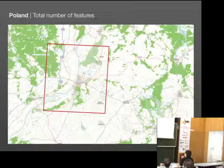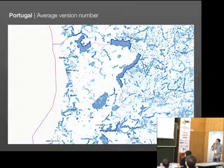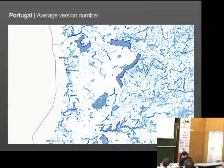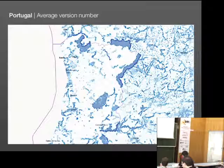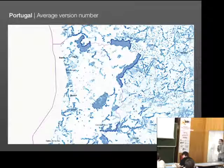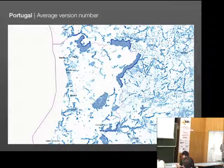Another interesting country is Portugal, which in general has very low version numbers in the countryside except for the urban areas at the coast. We identified some areas at the border to Spain which have very high average version numbers. If you look at the images for the number of features, it depicts the same. We found out that these areas matched national parks or national preservation areas. We don't know whether there's some very active park rangers mapping here, or maybe it's a data import from a national institution. Again, we have to carefully look at surrounding areas to see if data is missing.